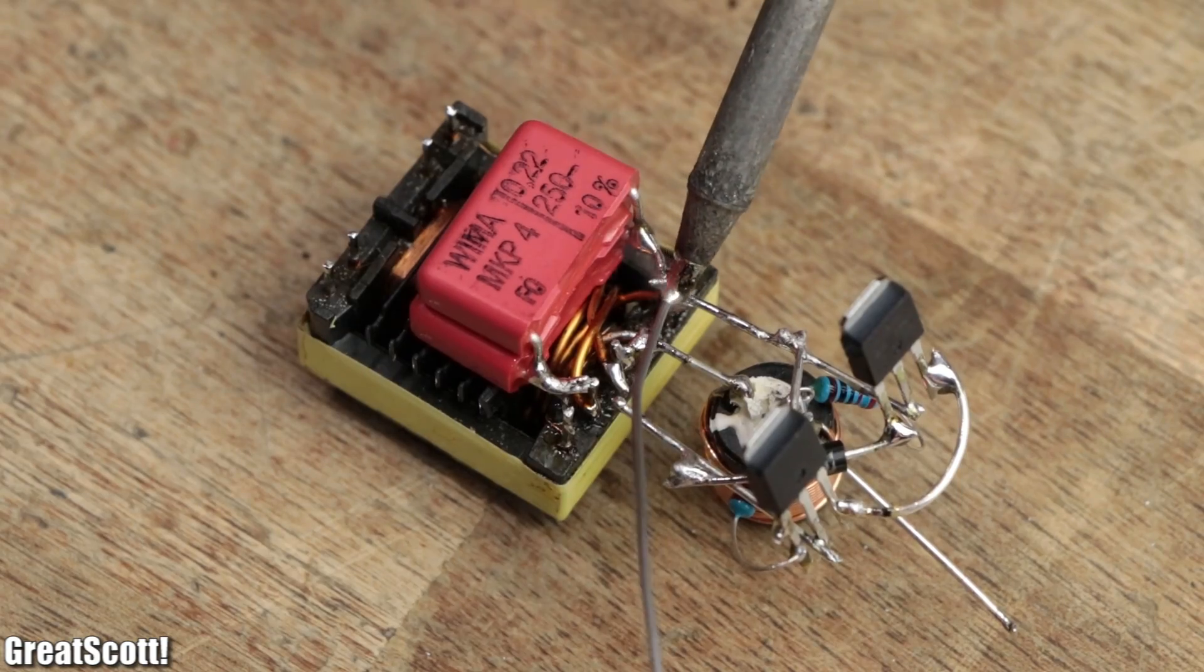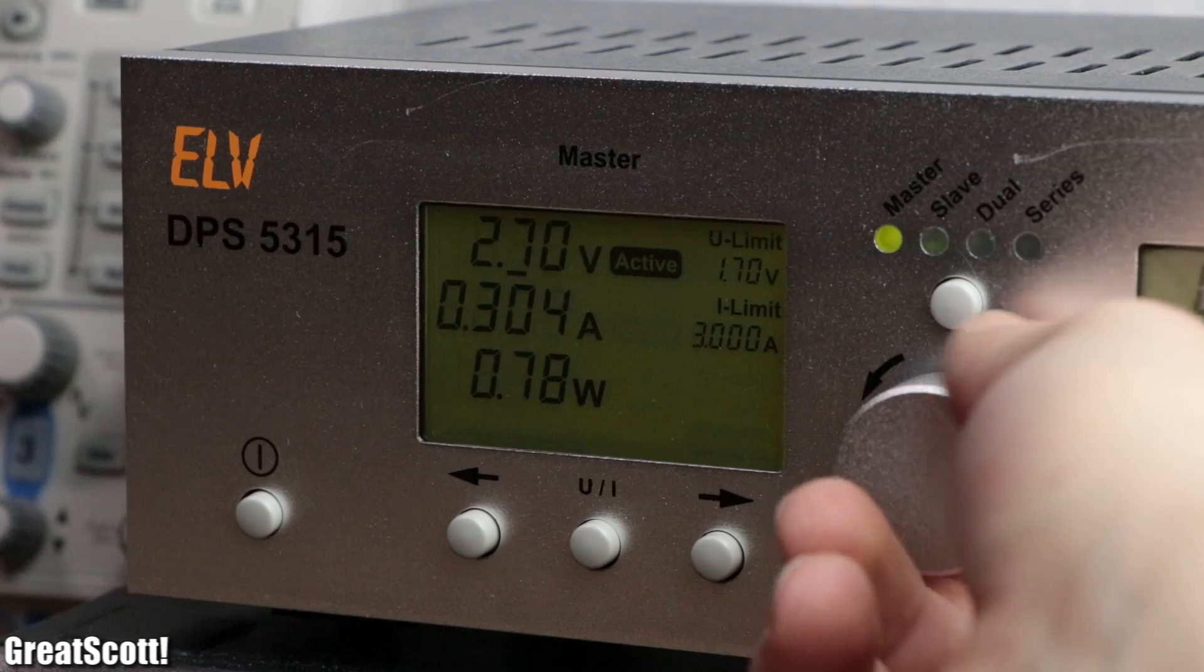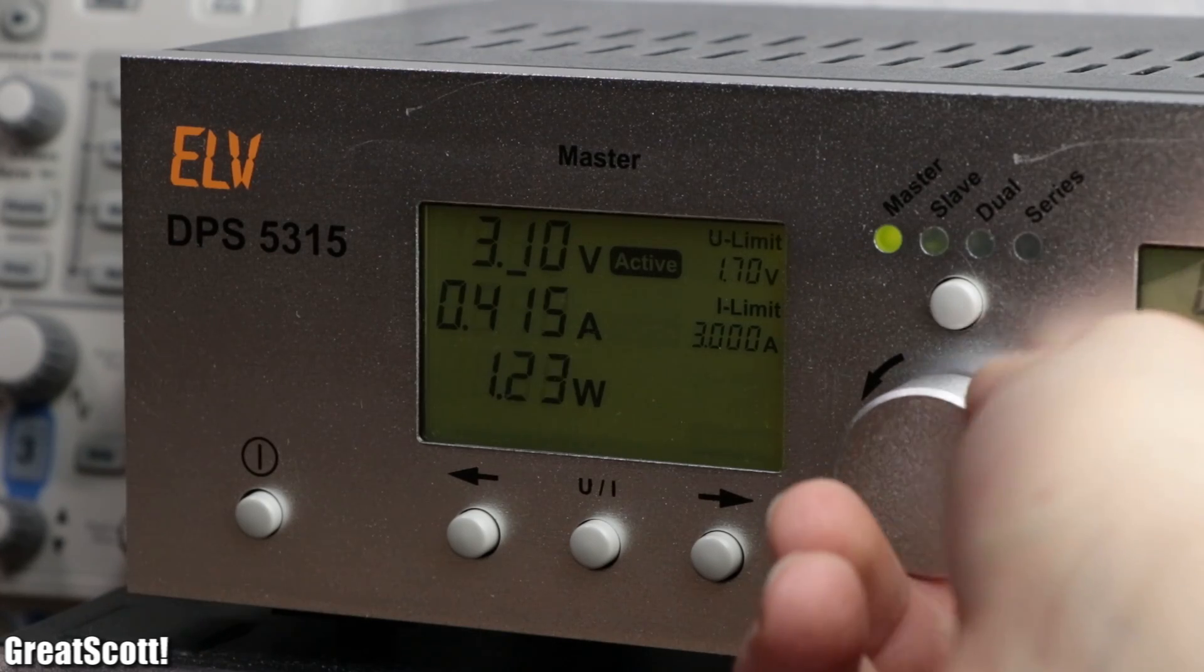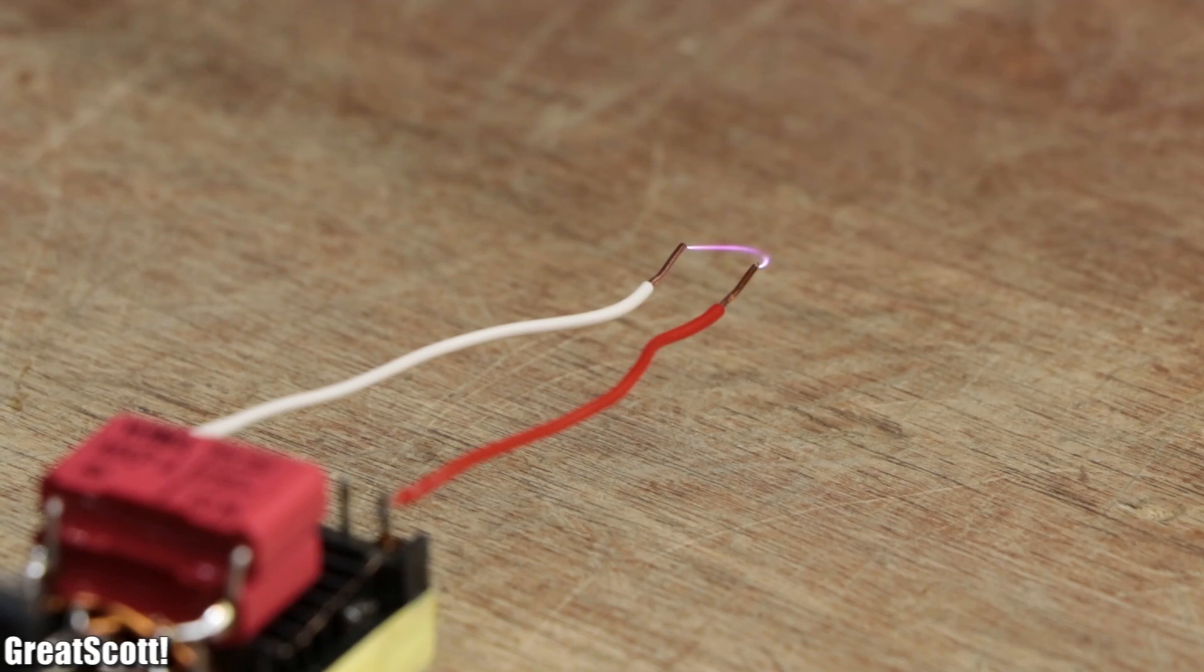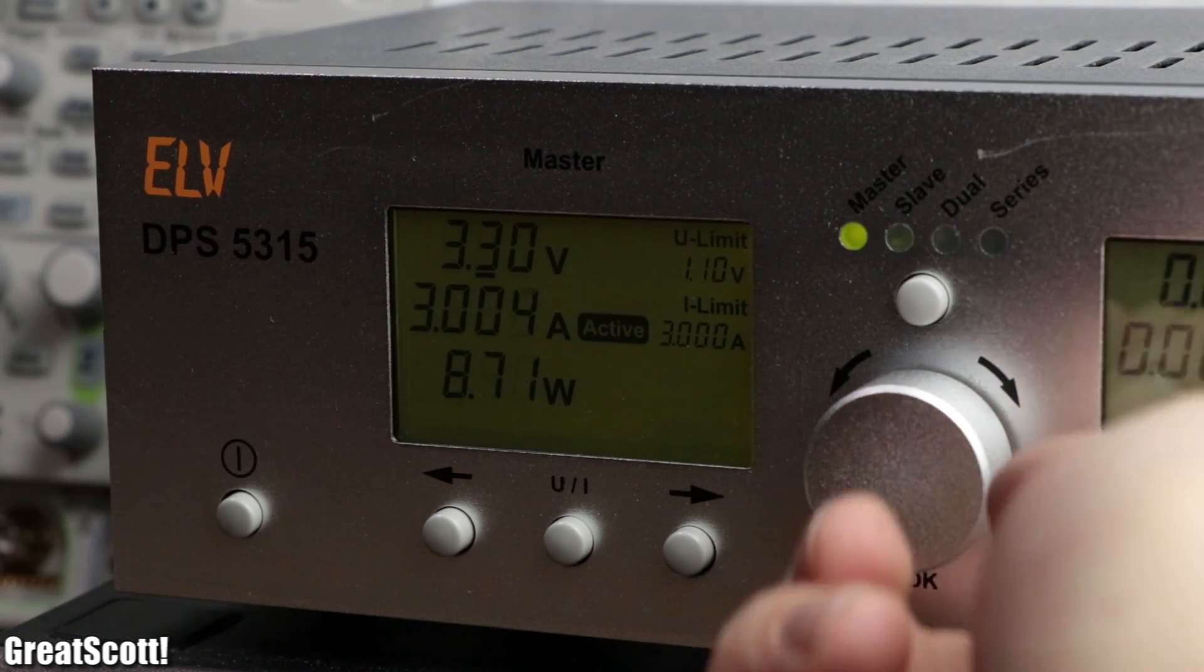Then I reattached the circuit and tested it once again. This time the arc was established at a voltage of 3.3 volts, perfect for the LiPo battery. Well, at least if the input current wouldn't be 3 amps.